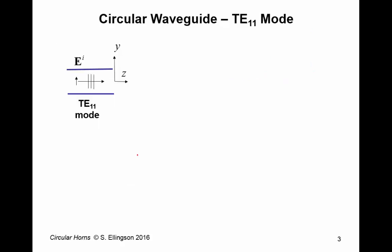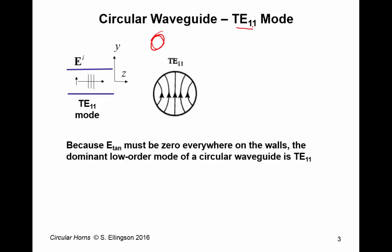Okay, first, the circular waveguide. A circular waveguide is simply a waveguide which has a circular cross-section. And the lowest order mode that we can get out of a circular waveguide is the transverse electric 1-1 mode, which looks like this.